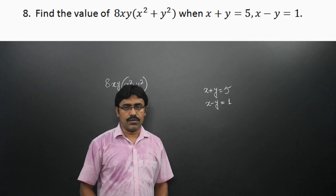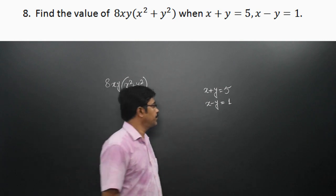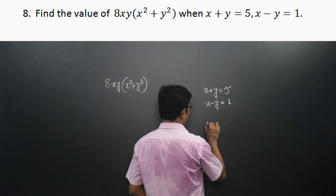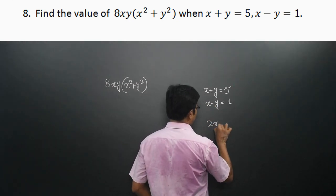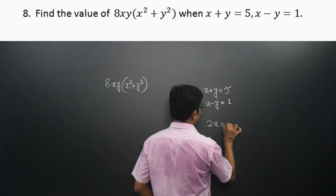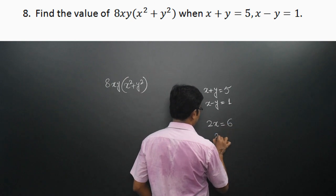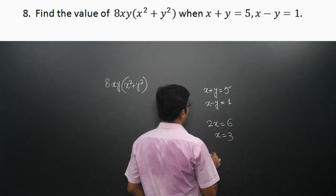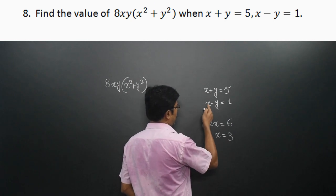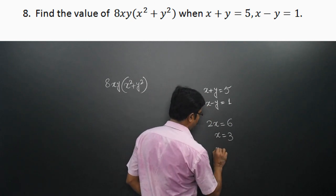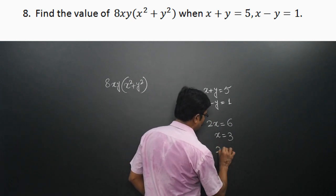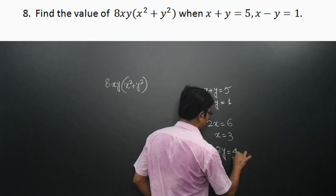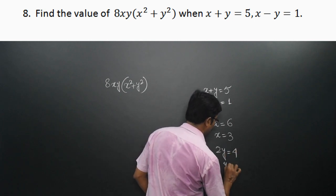Now let's calculate the value without using identities. If we add the two equations, we find 2x = 6, that is x = 3. And if we subtract the second one from the first one, we find 2y = 4, that is y = 2.